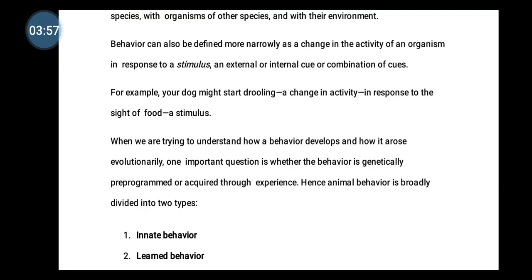What do we understand by innate behavior? Innate behavior is inherited — we don't learn it from others. For example, a spider spinning a web will perform the same behavior the first time it does it, building the same design. They don't need to learn how to do it. This is innate behavior.